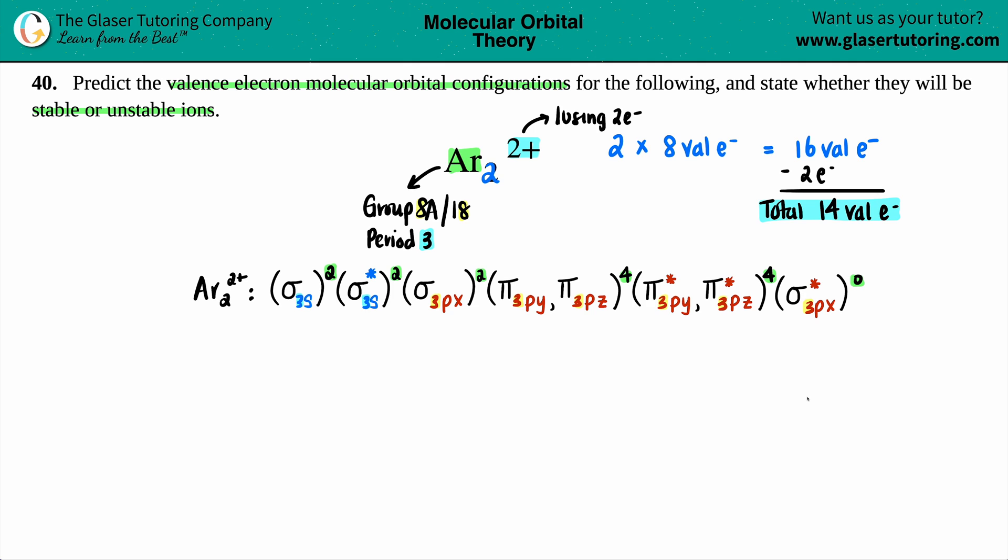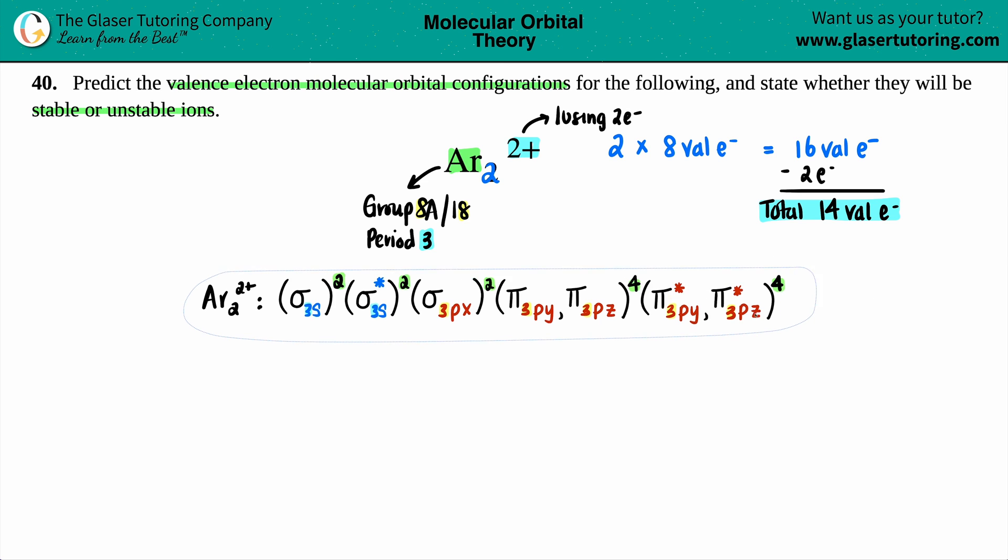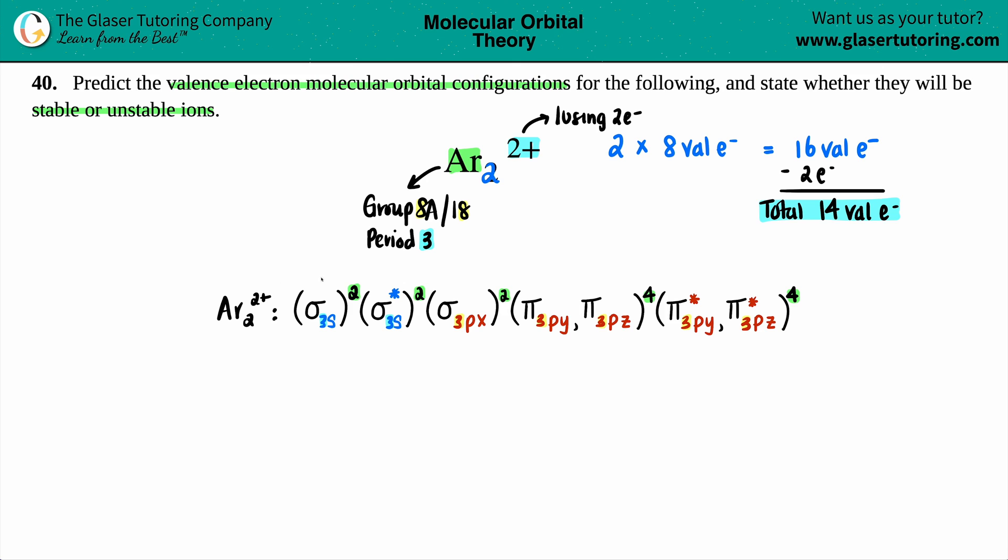That means this last one has zero electrons in it. Generally speaking, if you want to write a molecular orbital configuration, you technically only have to write up until the last electron is placed, so this one since no electrons are placed in it, you don't even have to write it. We have the valence electron molecular orbital configuration of Ar2 2+.